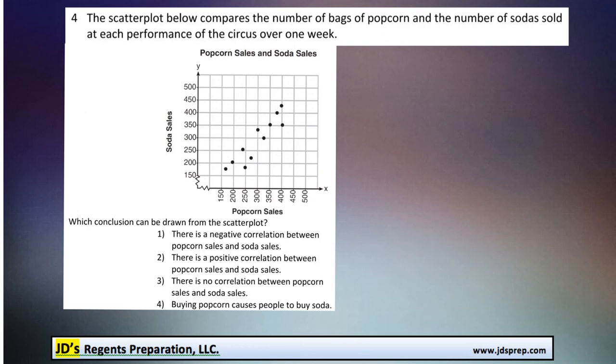Welcome to problem number four from the June 2016 Algebra Regents exam. In this question, we've got a scatter plot, and it's comparing the number of bags of popcorn to the number of sodas sold at each performance of a circus over one week.